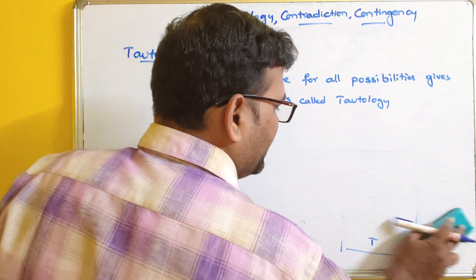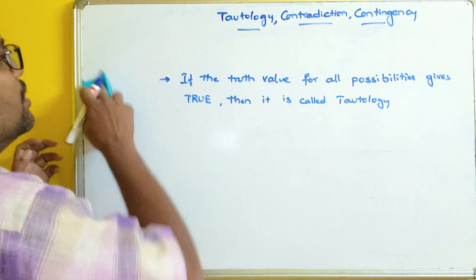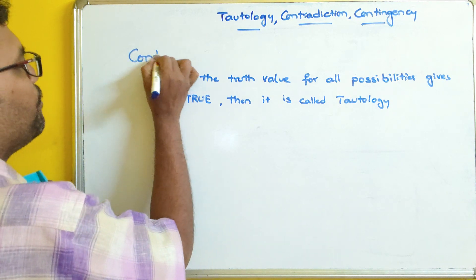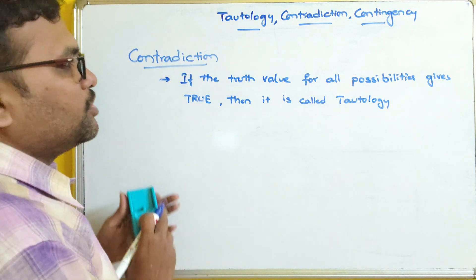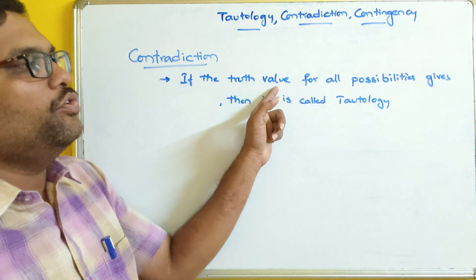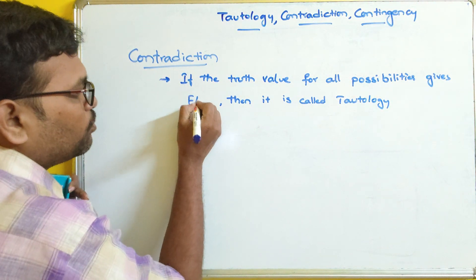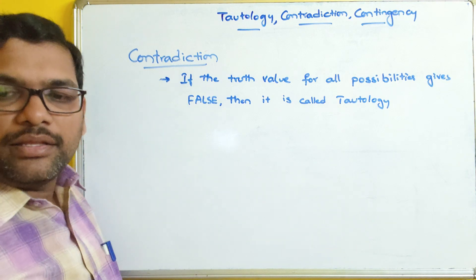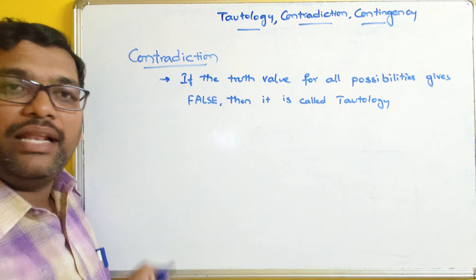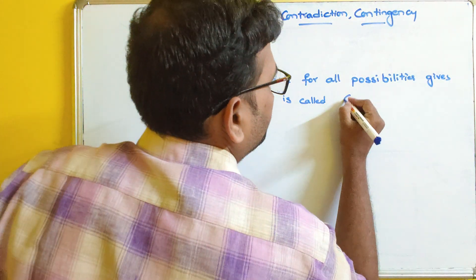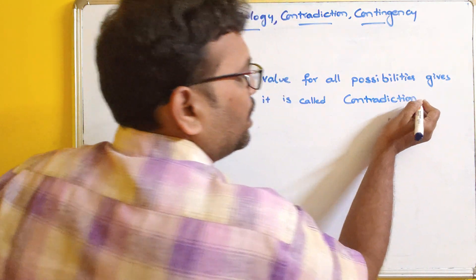The second concept is contradiction, which is quite opposite to tautology. If the truth value for all possibilities gives false — not true — then it is called a contradiction.